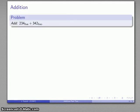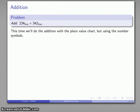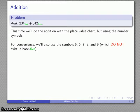Let's take the same problem we did last time: 234 base 5 plus 342 base 5. This time we'll do the addition still using the place value chart but using our standard number symbols. For convenience we'll also use our symbols 5, 6, 7, 8, 9 and possibly higher numbers. The important thing to remember is these symbols don't actually exist in base 5—they only have meaning because they are familiar to us.